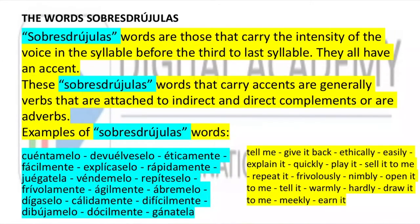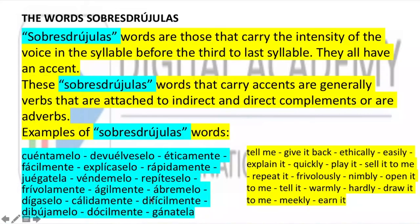The sobreesdrújulas words are those that carry the intensity of the voice on the syllable before the antepenultimate syllable, and they always carry an accent mark. These sobreesdrújulas words that carry accents are generally verbs attached to indirect and direct object pronouns, or adverbs. Examples: cuéntamelo, devuélveselo, éticamente, fácilmente, explícaselo, rápidamente, juégatela, véndamelo, repíteselo, frivolamente, ágilmente, ábremelo, dígaselo, cálidamente, difícilmente, dibújamelo, dócilmente, gánatela.